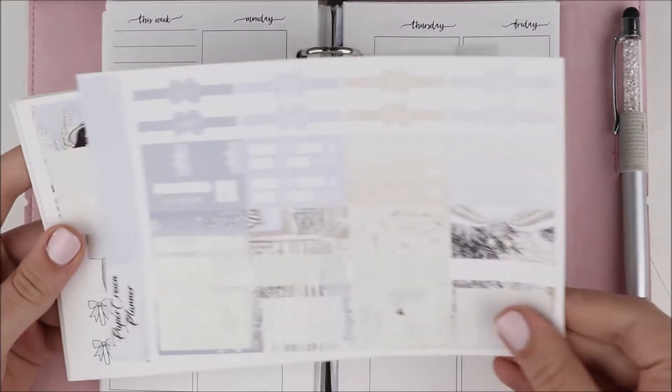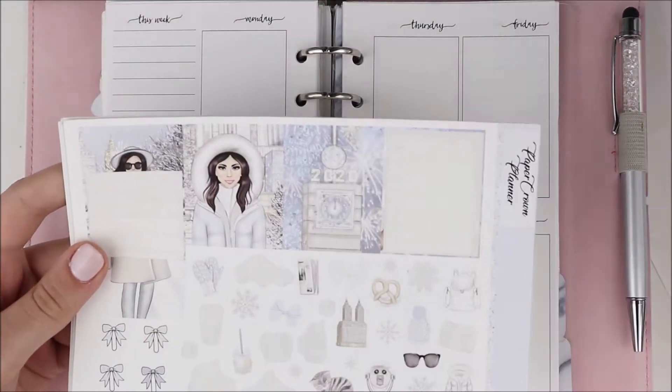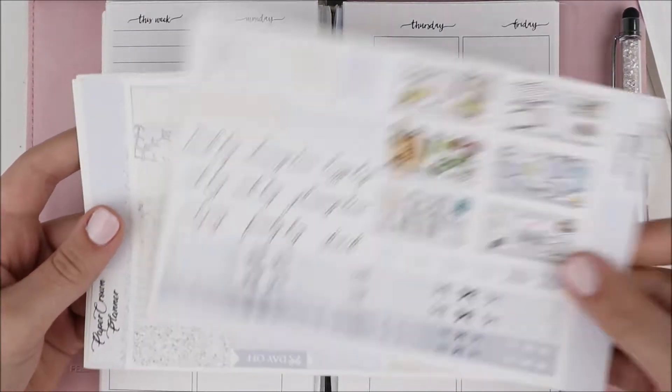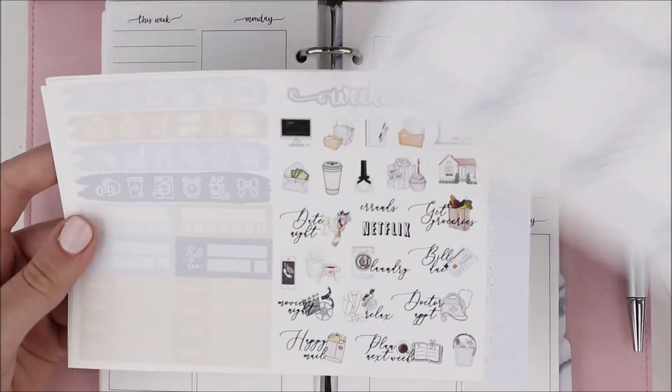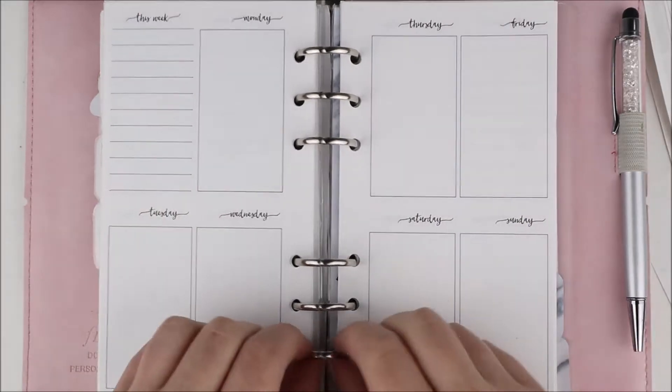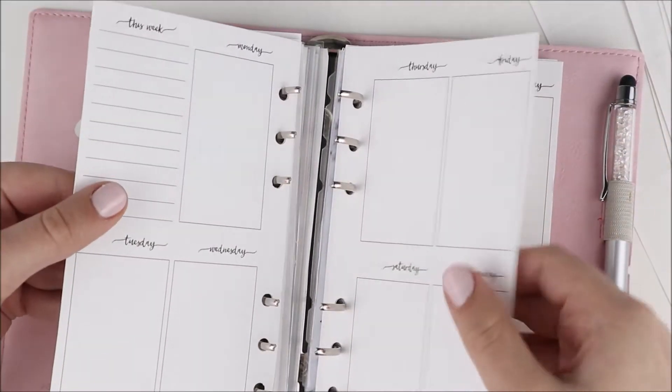Hey guys, it's Cheney and I'm back today with another plan with me. For this week's spread I'm using this kit from Paper Crown Planner. This kit is so big, it's a printable shop and she makes really beautiful kits. I love the way that she does her full boxes and just everything, I really like it.